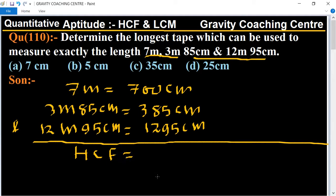All the numbers are divisible by 5, giving us 140, 77, and 259. And again all these numbers are divisible by 7.